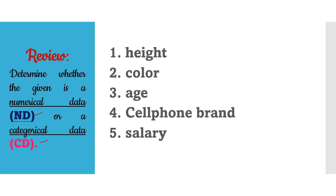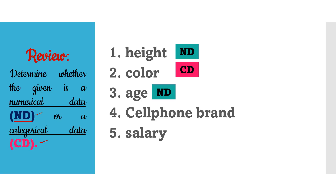For example, in number one, height is a numerical data because height can be expressed as 1.67 meters or 152 centimeters — as long as you can express it in numbers. Number two is a categorical data because colors cannot be expressed as numbers. Colors can be red, orange, yellow, green, and so on. Number three is a numerical data because age can be expressed as 11, 12, 20, 50, and so on.